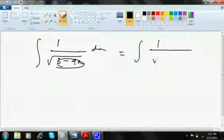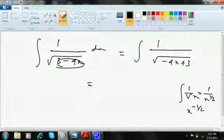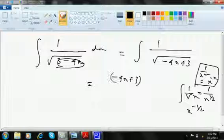So first of all try to make it minus 4x plus 3 and think of how much is 1 by root x, which is x to the power minus 1 by 2 because this is 1 by x to the power 1 by 2 and it becomes x to the power minus 1 by 2. So this is minus 4x plus 3 whole to the power minus 1 by 2 dx.